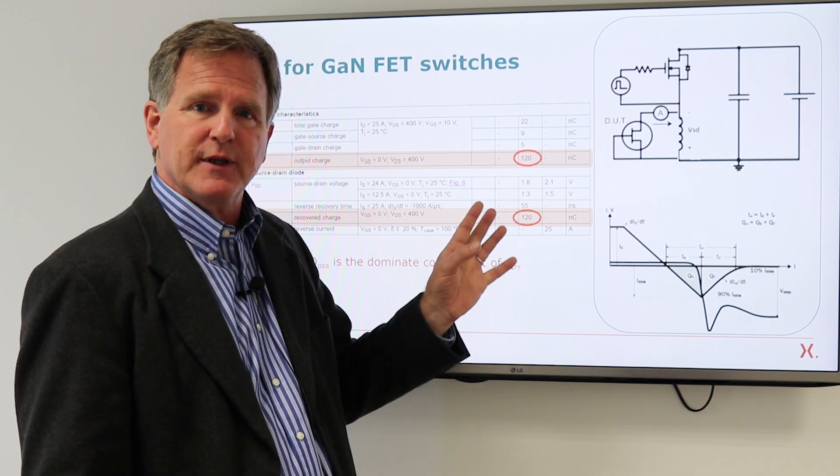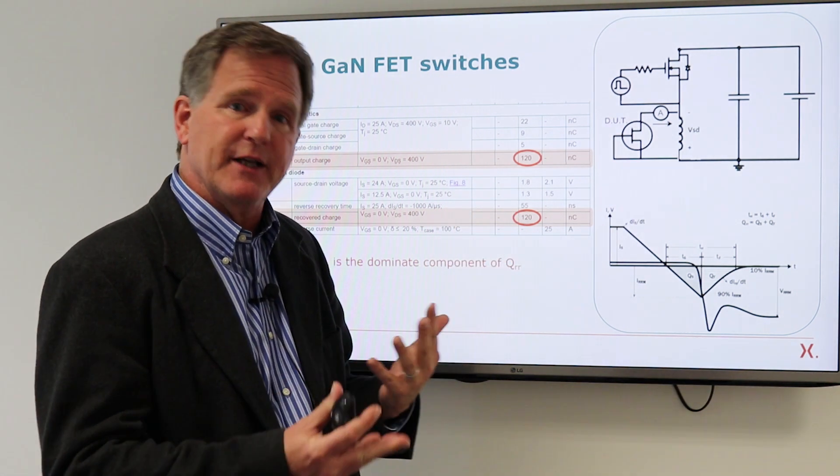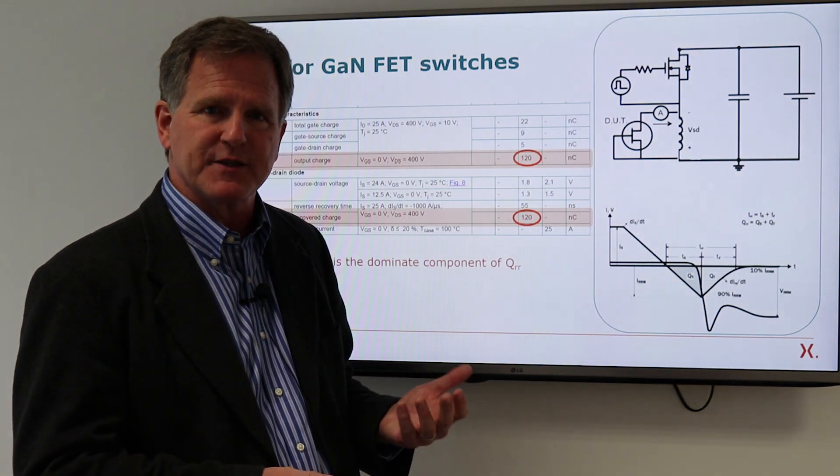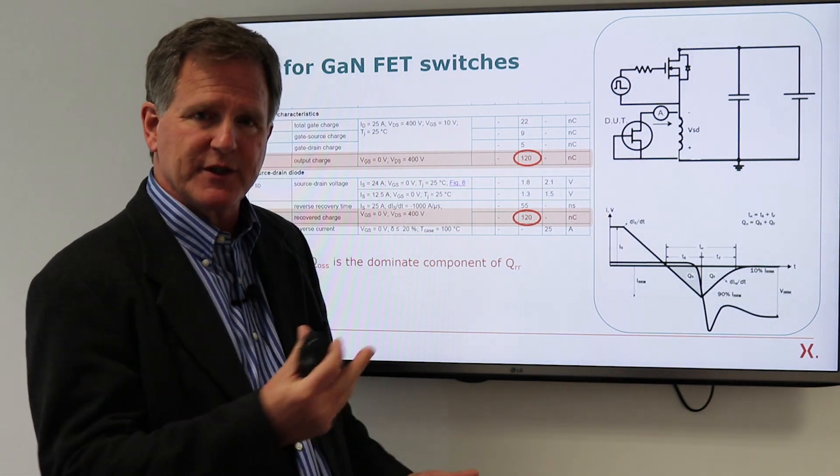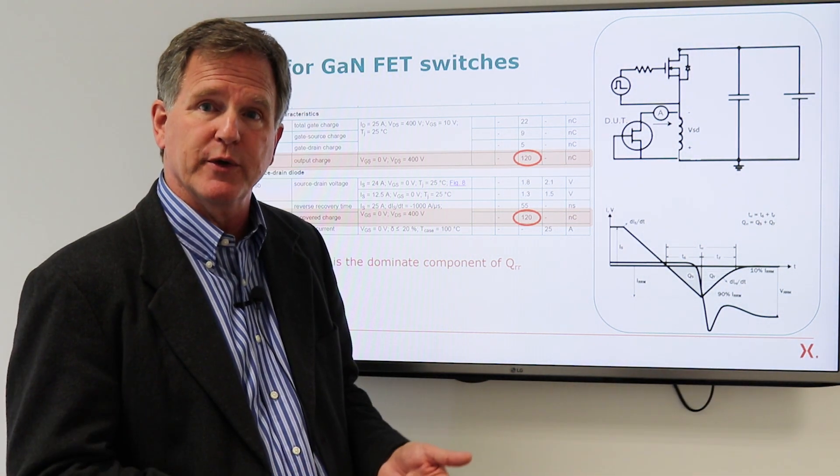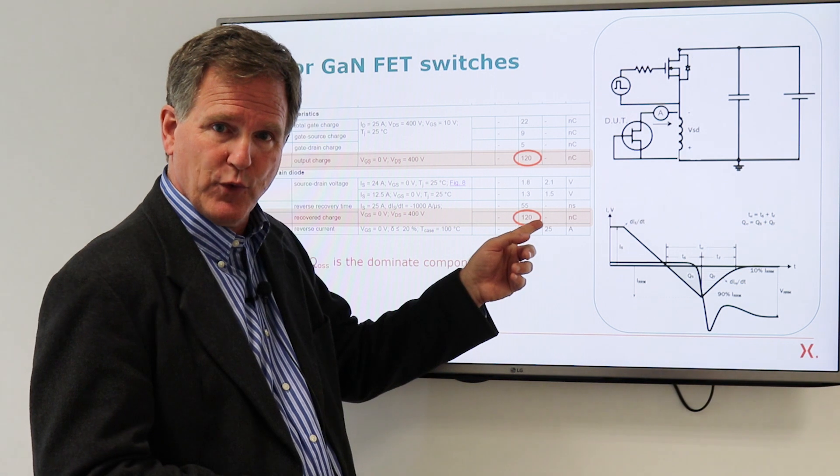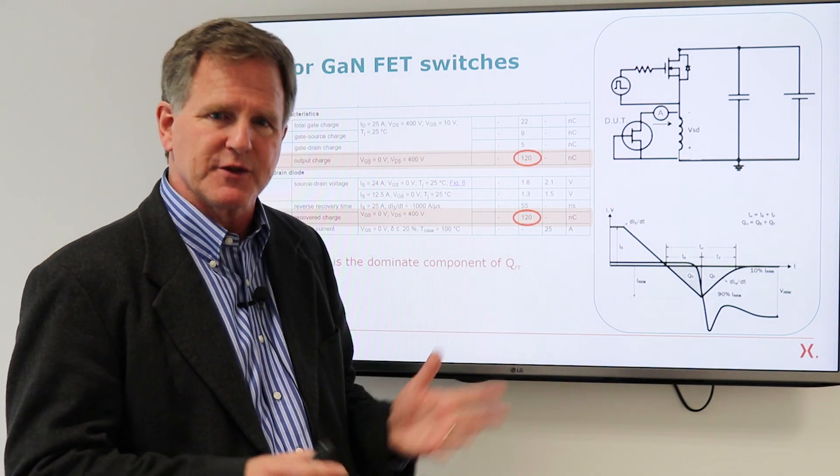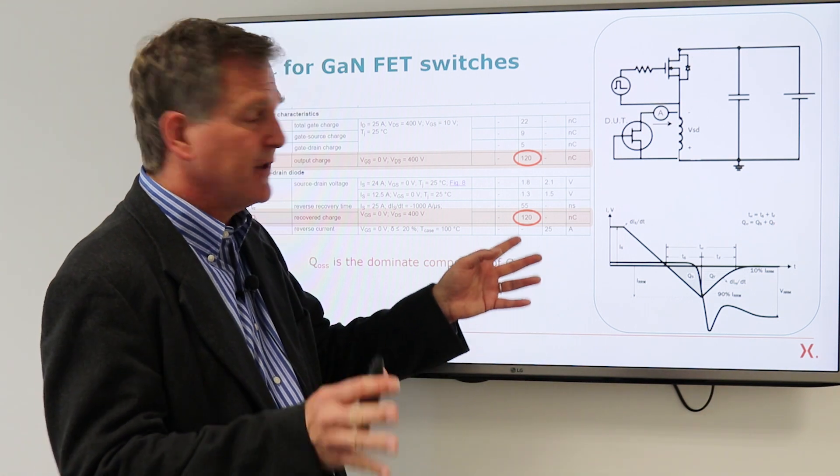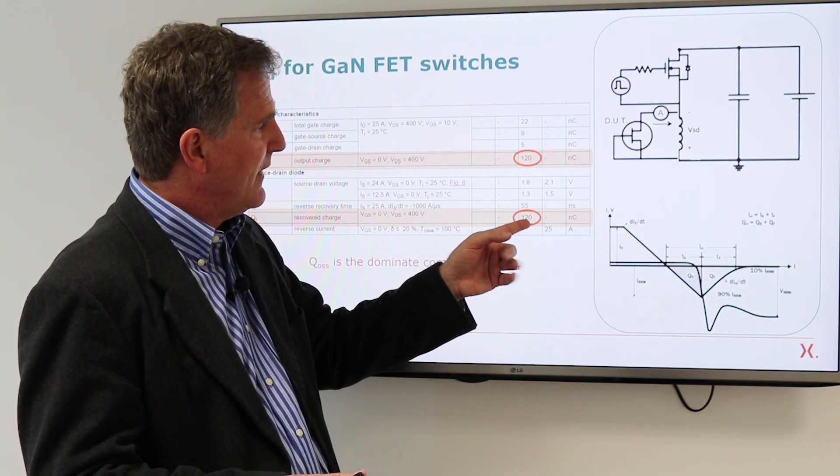Now the confusion comes in if you compare data sheets for other GAN devices. Some manufacturers don't do the two-chip approach, and they'll say since there is no PN junction, there is no minority charge, and they'll put a zero for recovered charge. Okay, given the assumption and the understanding, that makes sense. But it does lead to confusion, if you compare that to this number, which includes the output charge.